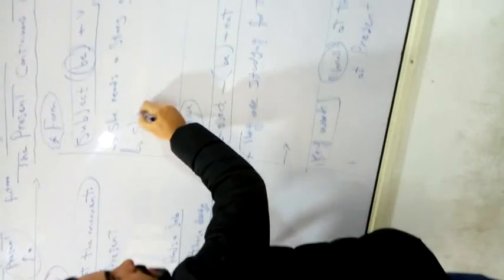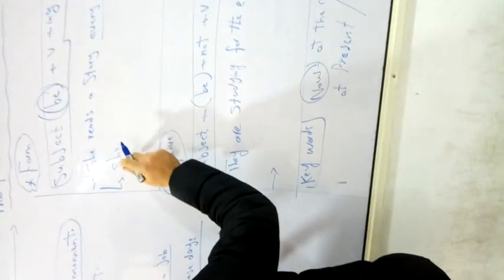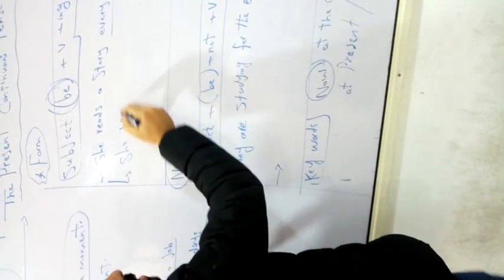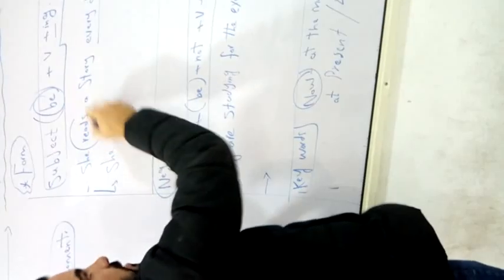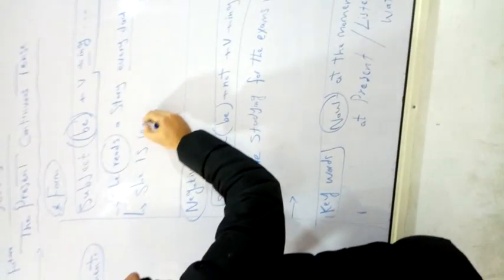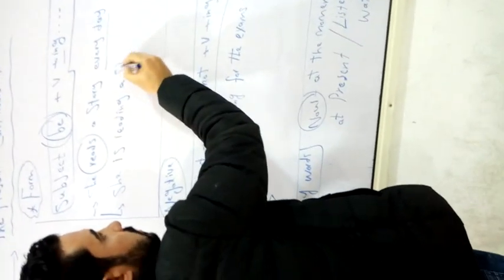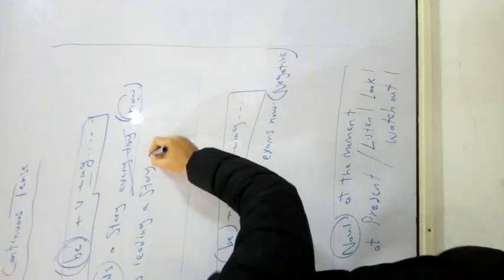This is the structure. The subject is she. After that, the verb to be. She takes IS. What about the verb? The verb read becomes reading, a story. And we cancel every day and add now. Got it?